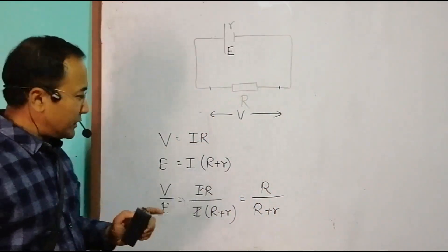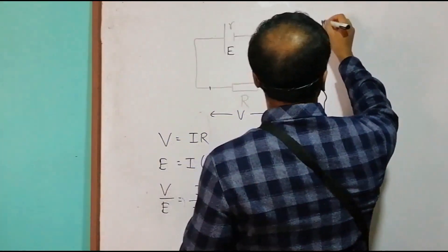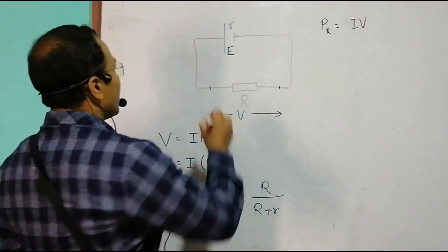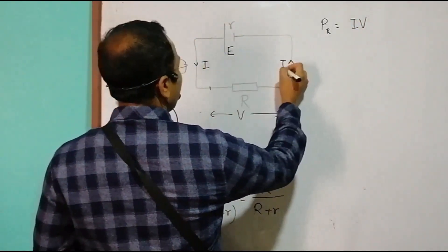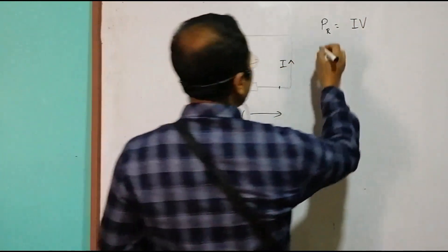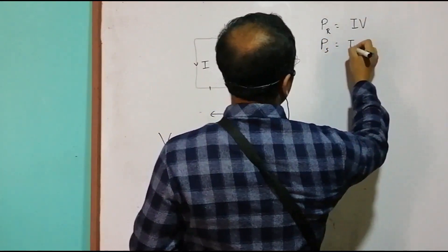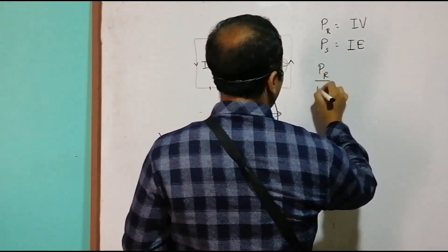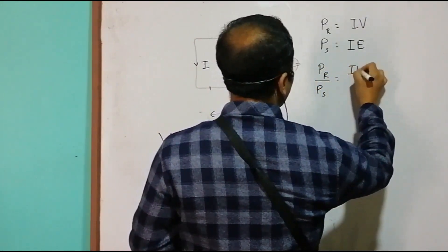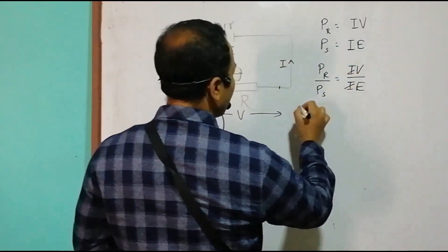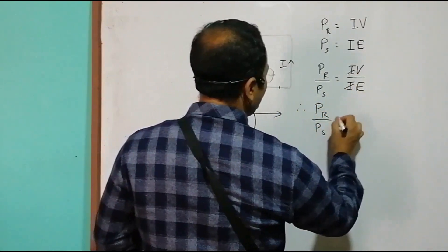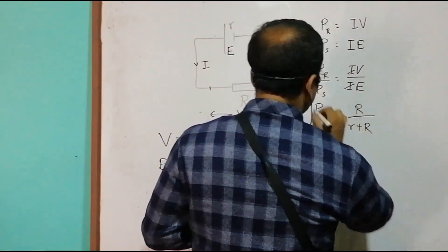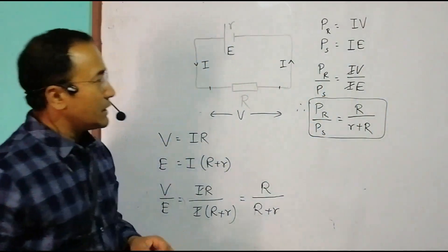Now the power in the external resistor is equal to IV, and the power given by the source is equal to IE. So the ratio of power in the resistor to power from the source is IV/IE = V/E, which equals R/(R + r). This is the ratio of power in the resistor compared to power from the source.